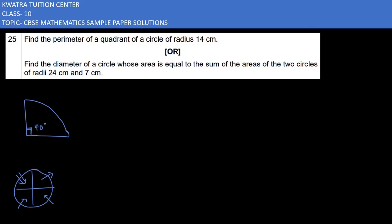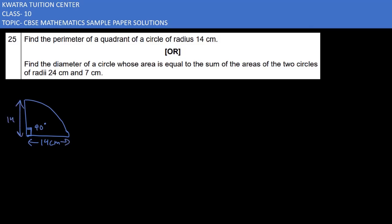The radius of the circle is 14 cm. For the perimeter, we have two straight sides — this length is 14 and this length is 14. So we have two radii of 14 cm each which we have to add.